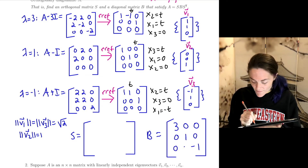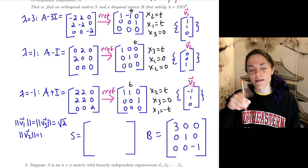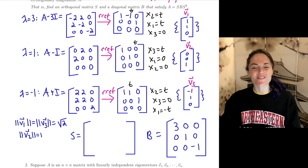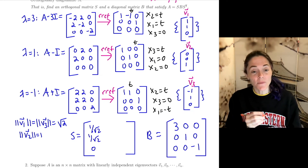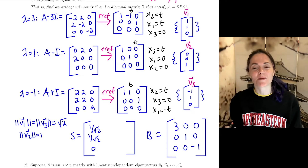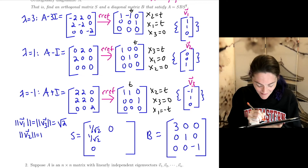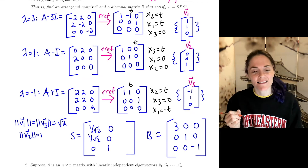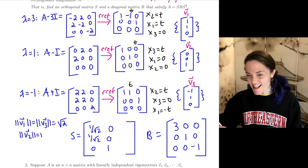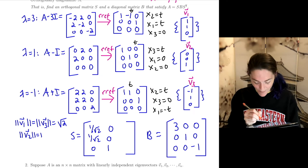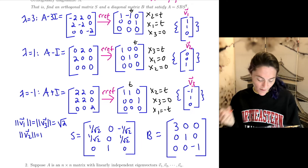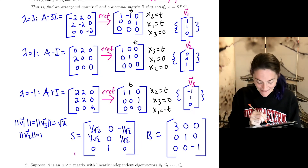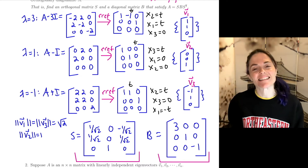For matrix S, we have our eigenvectors divided by their lengths to make them unit vectors. Lambda equals 3 corresponds to V1 in the first column: 1 over root 2, 1 over root 2, 0. Lambda equals 1 gives V2 in the second column: 0, 0, 1. Lambda equals minus 1 gives V3 normalized in the third column: minus 1 over root 2, 1 over root 2, 0. Now S is orthogonal and B is diagonal, so we have orthogonally diagonalized this matrix.